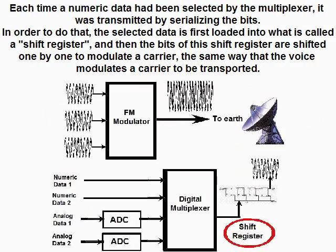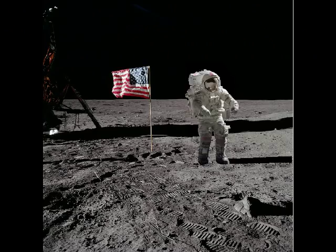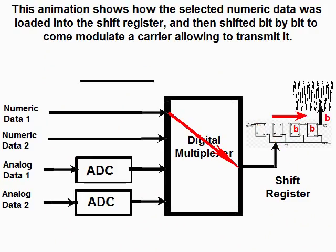Each time the numeric data had been selected by the multiplexer, it was transmitted by serializing the bits. The selected data is first loaded into what is called a shift register, and then the bits of this shift register are shifted one by one to modulate a carrier — the same way that voice modulates a carrier to be transported. This animation shows how the selected numeric data was loaded into the shift register and then shifted bit by bit to modulate a carrier, allowing it to be transmitted.